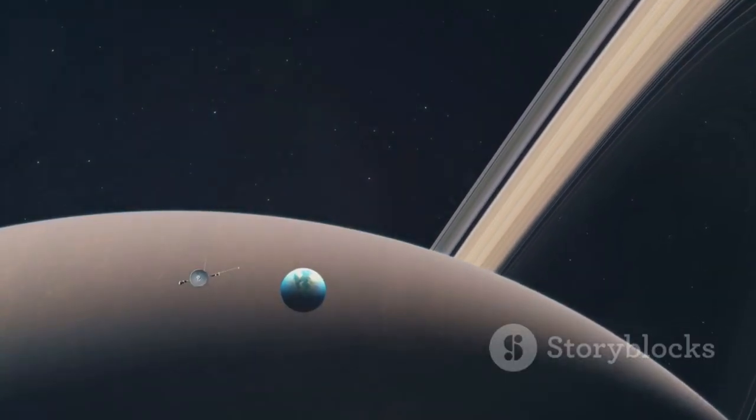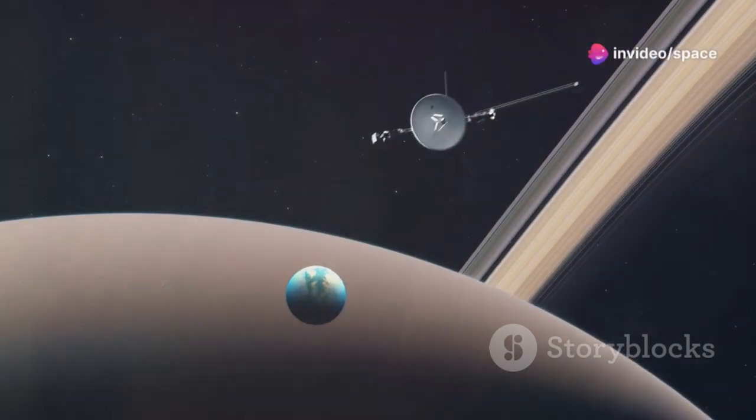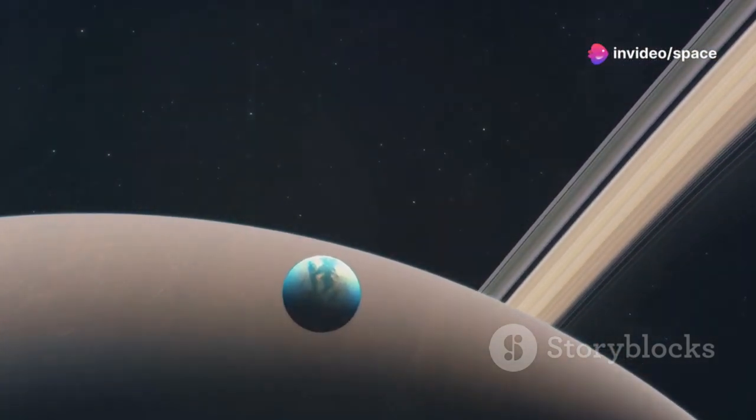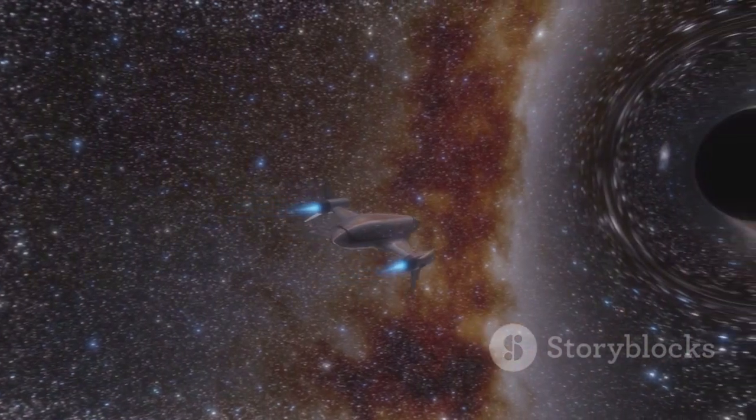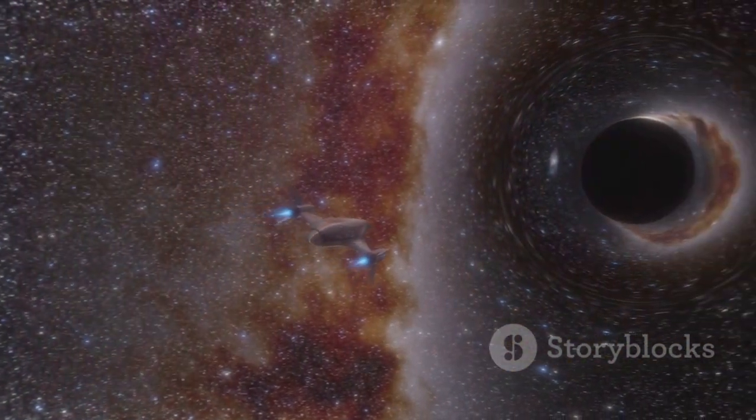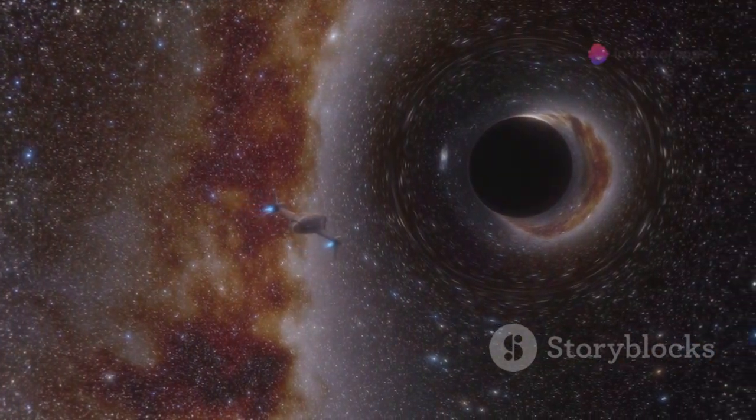Voyager 1 and Voyager 2, our brave explorers, were sent to study the gas giants: Jupiter, Saturn, Uranus, and Neptune. The mission's primary goal was to conduct close-up studies of these planets and their moons, sending back data that would transform our understanding of these celestial giants.